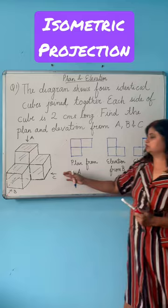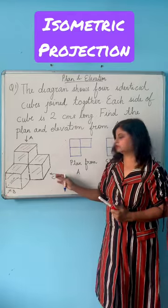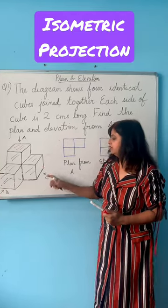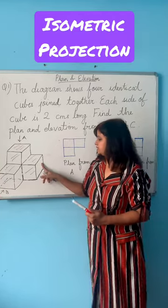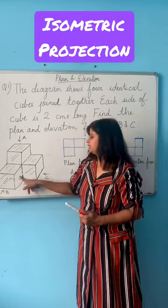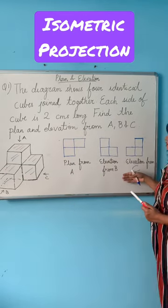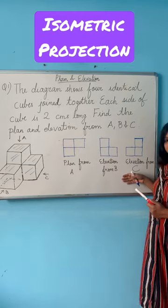Now same thing — when you imagine yourself standing at C, you will be seeing this side, this side, and this side. So that is the elevation from C.